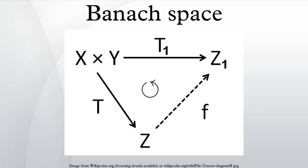Several characterizations of spaces isomorphic to Hilbert spaces are available. The parallelogram law can be extended to more than two vectors, and weakened by the introduction of a two-sided inequality with a constant C ≥ 1. Kwapień proved that if for every integer n and all families of vectors x₁,...,xₙ in X a certain inequality holds, then the Banach space X is isomorphic to a Hilbert space. In the same article, Kwapień proved that the validity of a Banach-valued Paley–Wiener theorem for the Fourier transform characterizes Banach spaces isomorphic to Hilbert spaces.